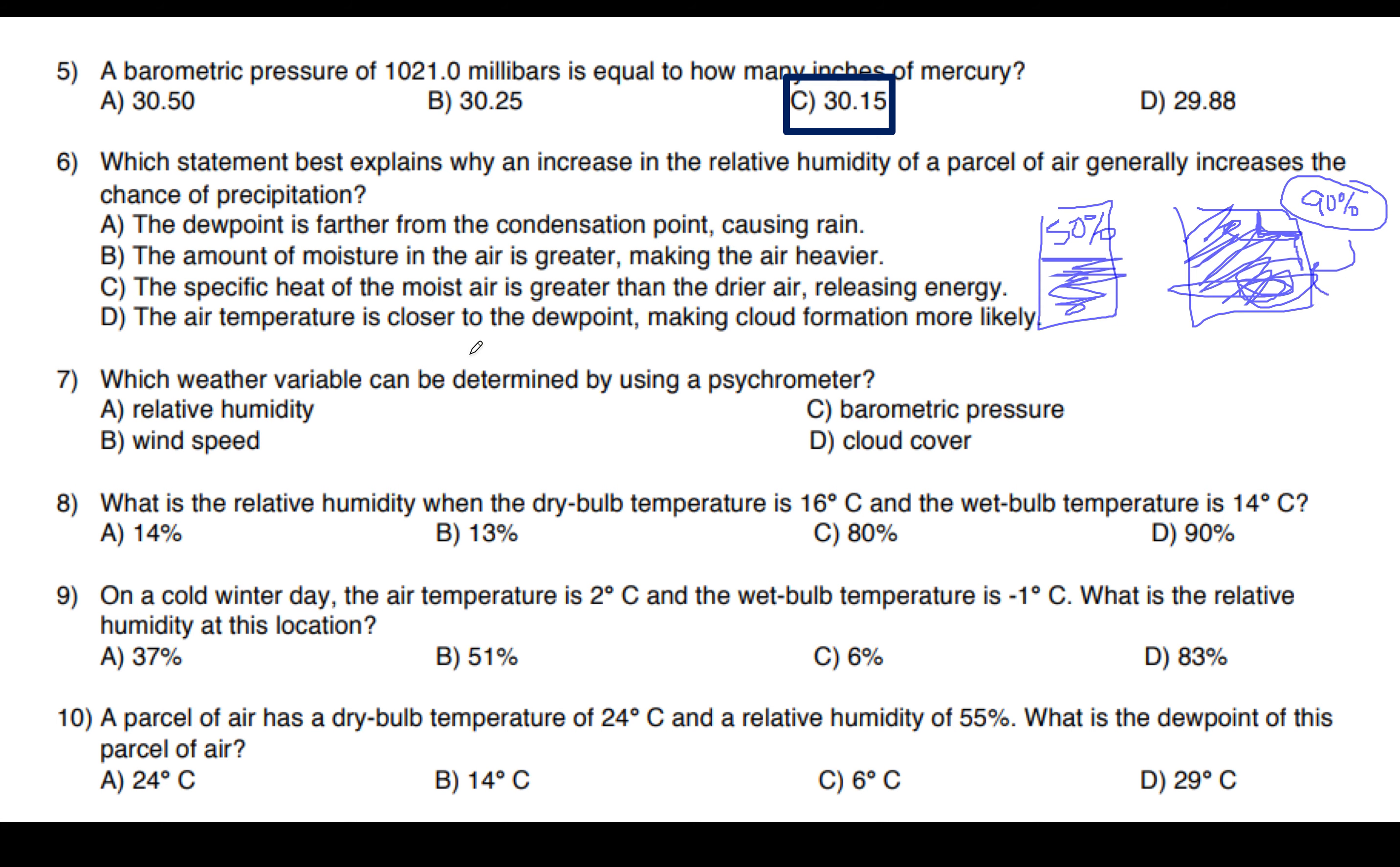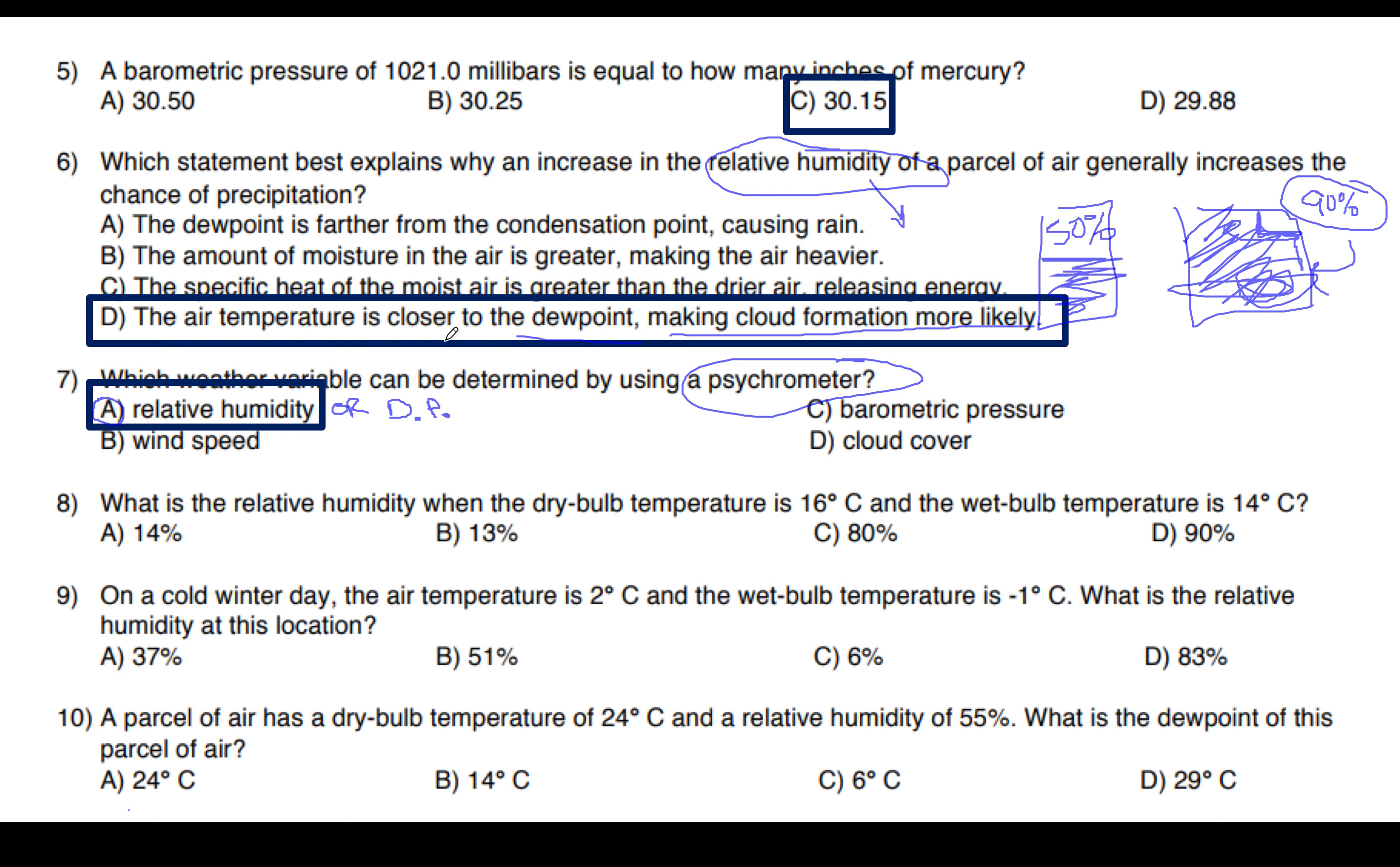Chances of it raining are much higher. So, as we increase the humidity of the air, we're essentially adding more water vapor to it. If we increase the water vapor, we have a higher chance of the air temperature being closer to the dew point, making cloud formation more likely. So the best answer would be D. Remember that a sling psychrometer is used to determine relative humidity or dew point.